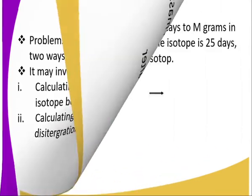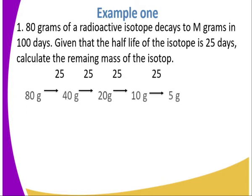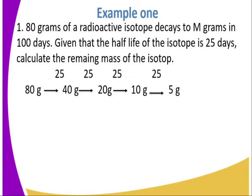Example one: 80 grams of a radioactive isotope decays to m grams in 100 days, given that the half-life of the isotope is 25 days. Calculate the remaining mass. Starting with 80 grams, after each 25-day half-life the mass decreases by half: after 25 days → 40 grams; after another 25 days → 20 grams; after another 25 days → 10 grams.